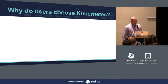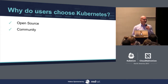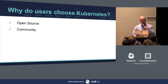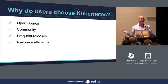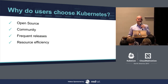So why do users choose Kubernetes? There are a lot of reasons. They like open source and they like the community — love the community. There's a lot of community here this week. Then there's frequent releases and resource efficiency. That's actually what got Google to use containers ten years ago: how many apps can we pack in a fixed number of machines, and containers make that much easier.